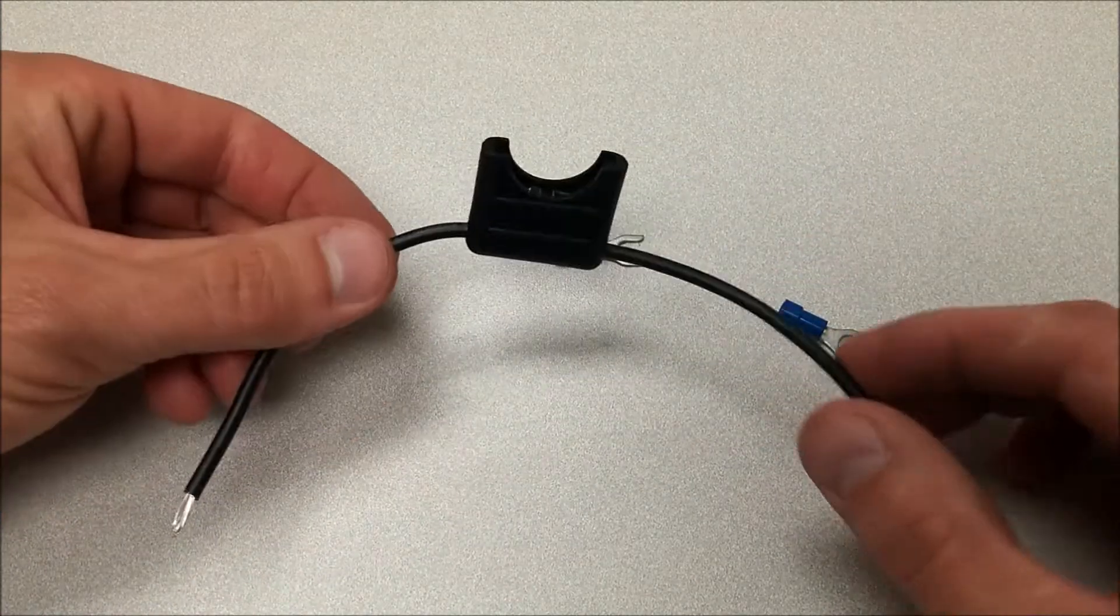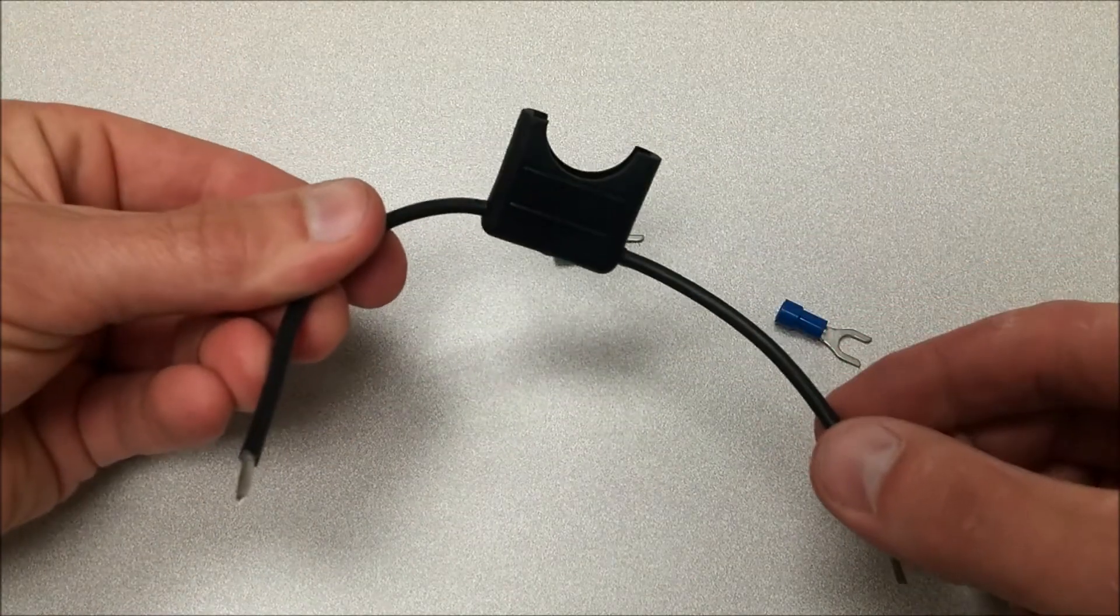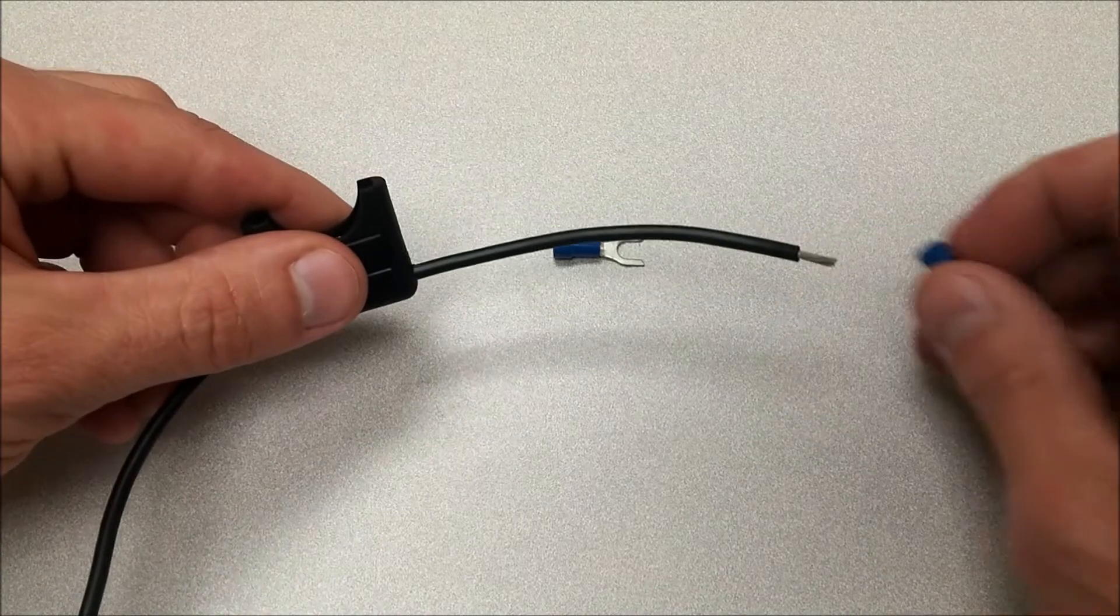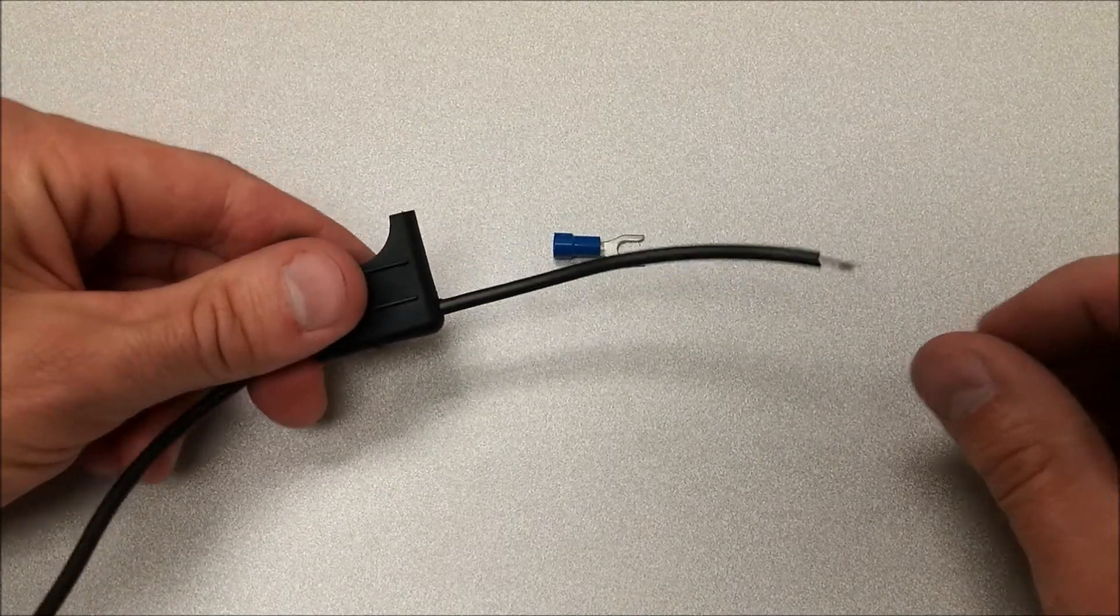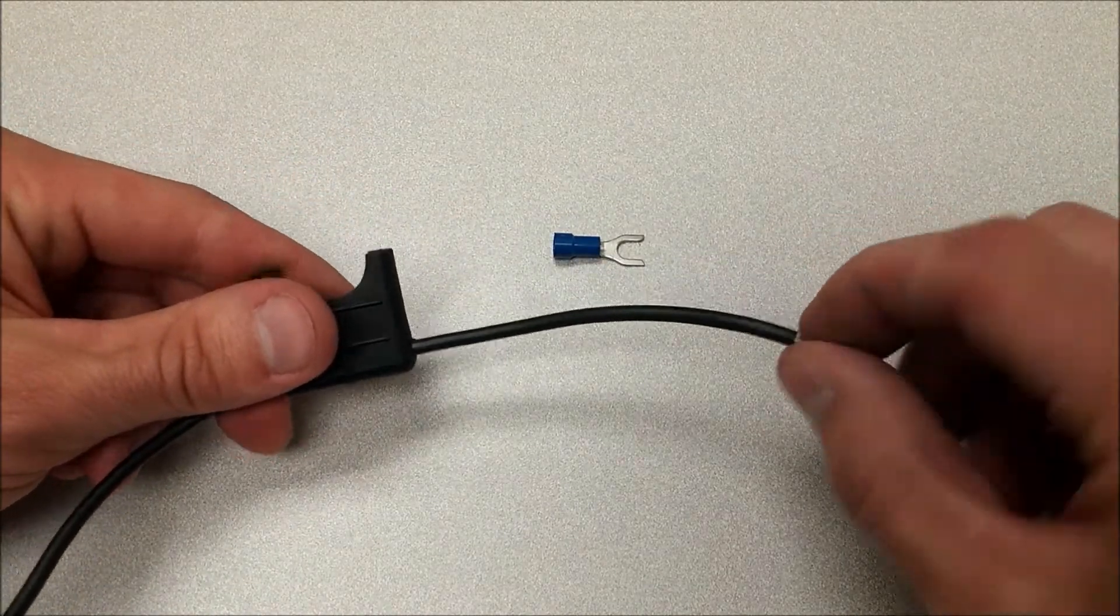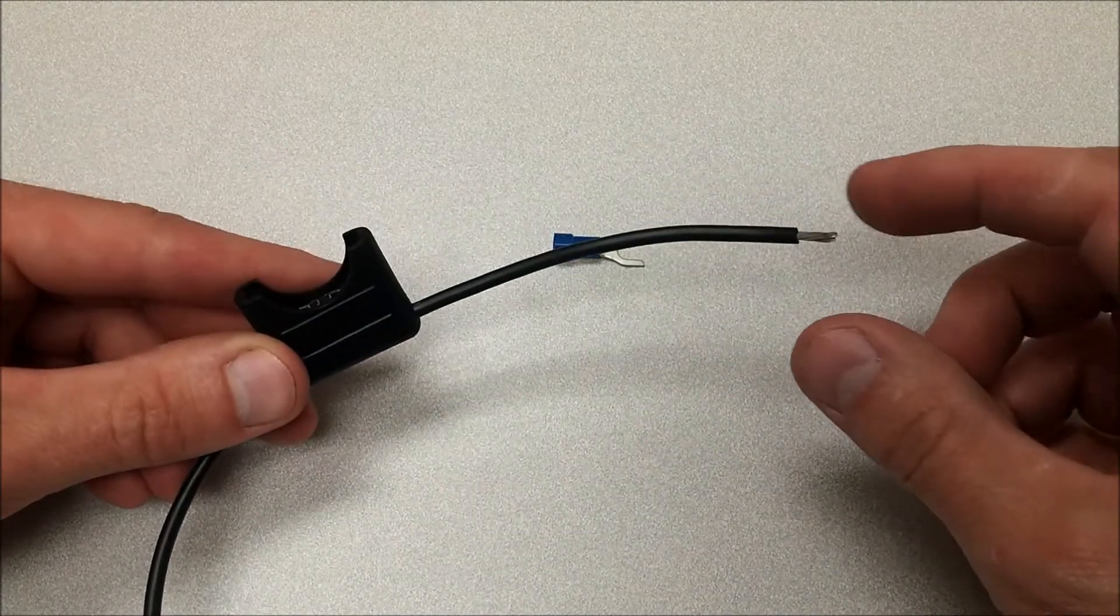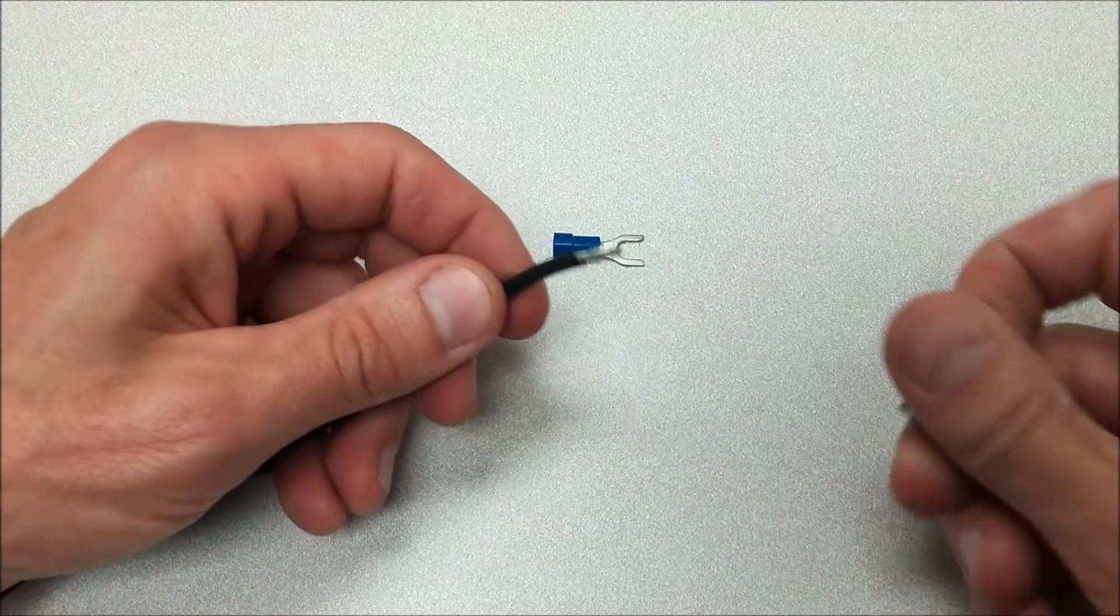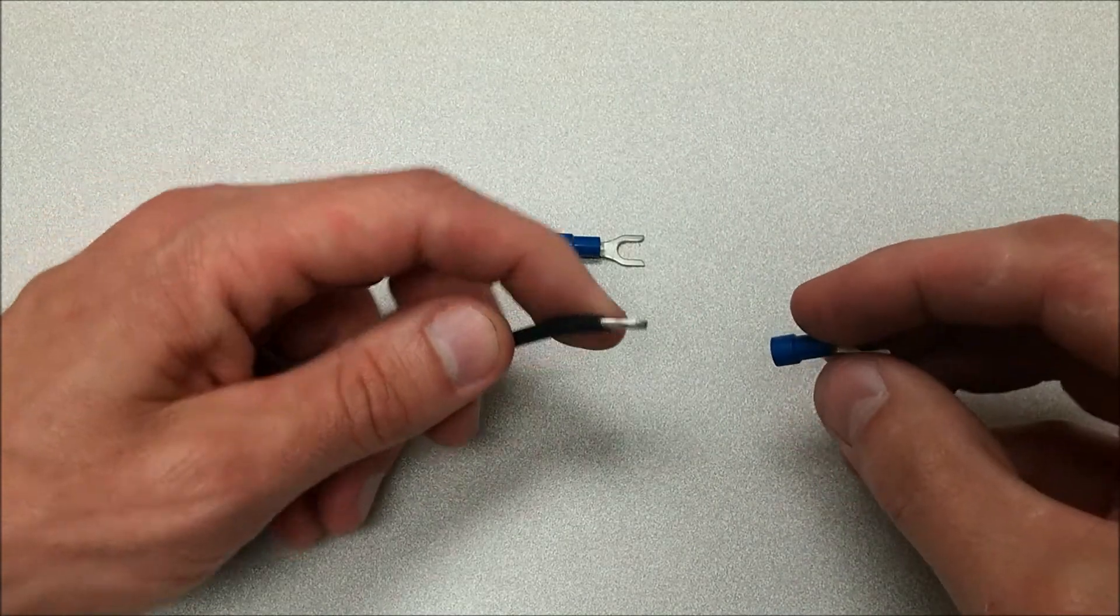So we start out with a fuse holder. This is something you can buy for two to three or four dollars at any auto parts store or online somewhere. It comes just like this and the wires are even stripped on the ends. So we'll attach these crimp terminals.